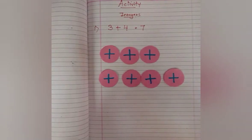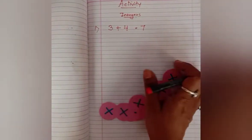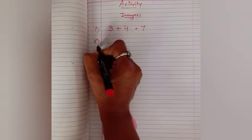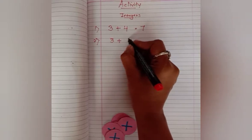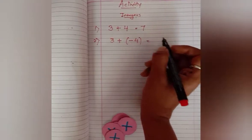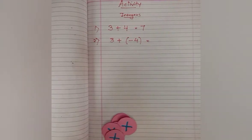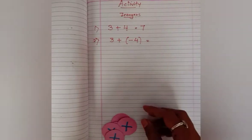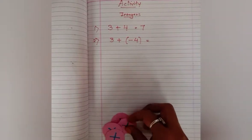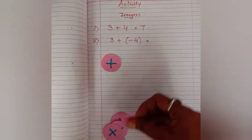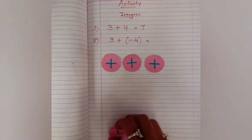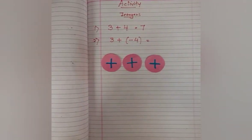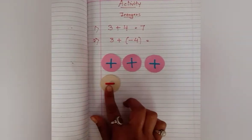Now let us do it with one positive number and one negative number. Here we are taking three as a positive number and four as a negative number. Let us see what the answer will be. Again, for three we will take three positive circles — one, two, and three. Now four is negative, so we will take four negative circles.